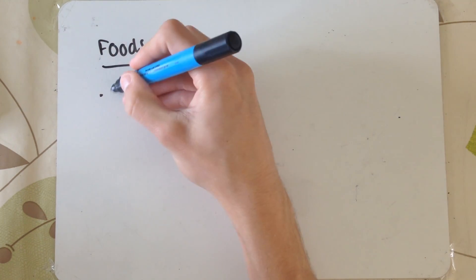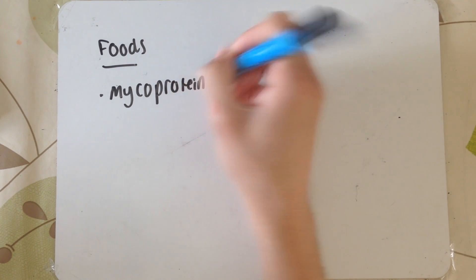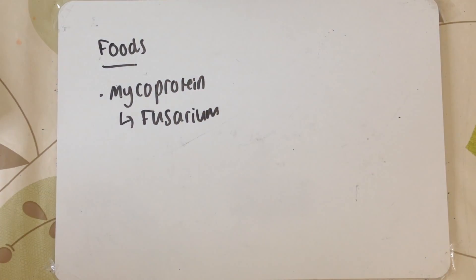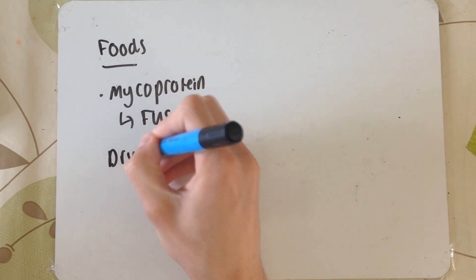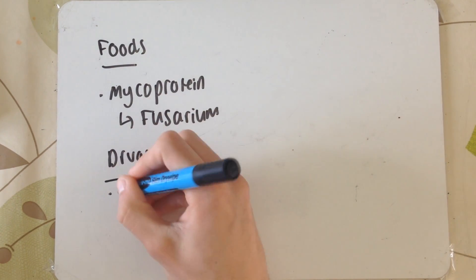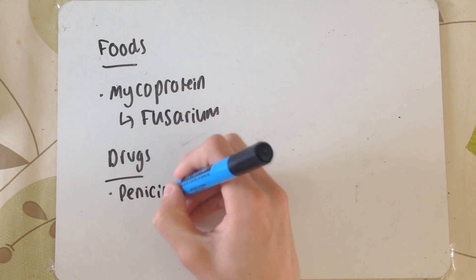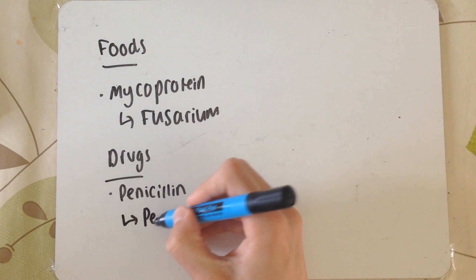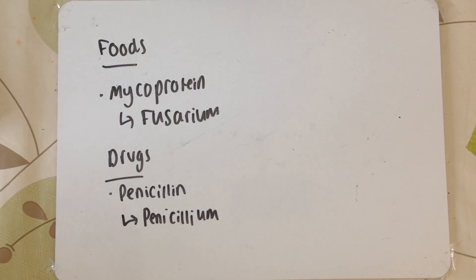So what foods can we produce with biotechnology? The first one we're going to talk about is mycoprotein — this is grown by the fungus Fusarium. Next we've got medicinal drugs such as penicillin; this comes from another fungus called Penicillium. This is grown in culture, and penicillin is basically an antibiotic product that is produced by this fungus.